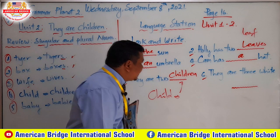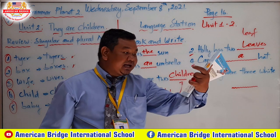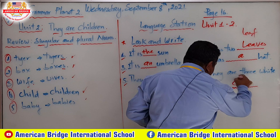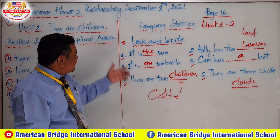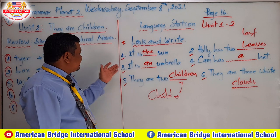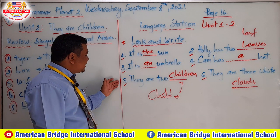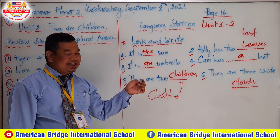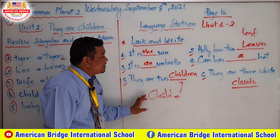Number six: look at the picture — it shows three clouds. Clouds is spelled C-L-O-U-D-S. Answer: 'They are three clouds.' So the correct answers for the exercise are: number one, 'It is the sun'; number two, 'Holly has leaves'; number three, 'It is an umbrella'; number four, 'Cam has a heart'; number five, 'They are two children'; number six, 'They are three clouds.'